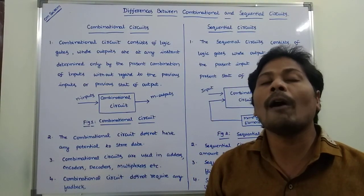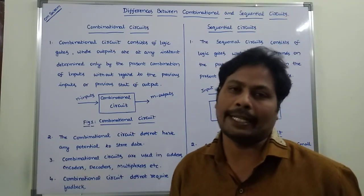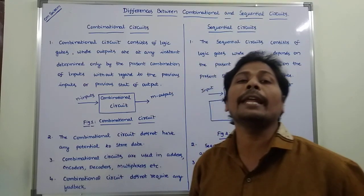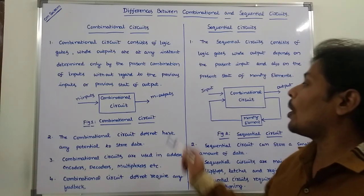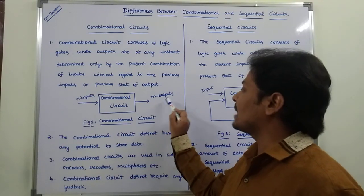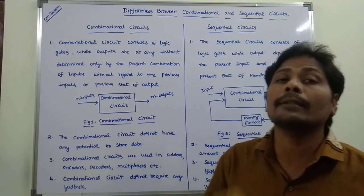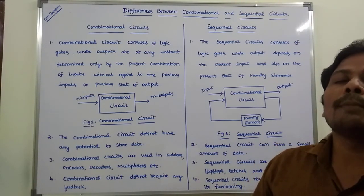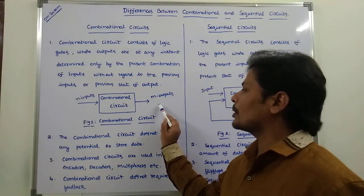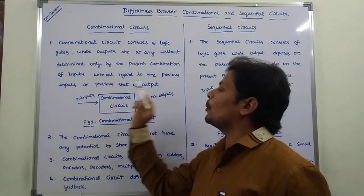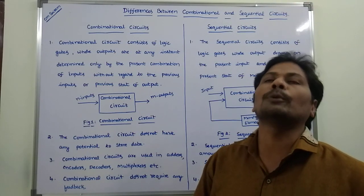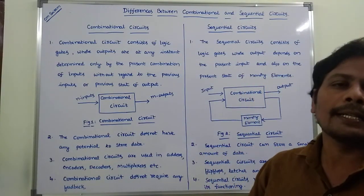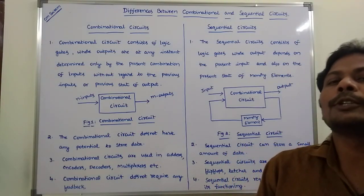The third difference: the combinational circuit does not require any potential to store the data. There is no memory element in the combinational circuit. Because the output depends only on the present input, not on the previous input, there is no need for storage of inputs. So because of that reason, the combinational circuit does not require any potential to store the data.